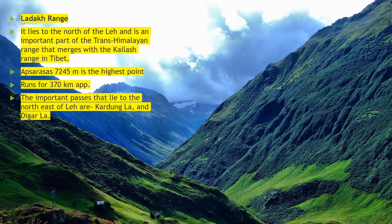Next comes the Ladakh range. It lies north of Leh and is an important part of the Trans Himalayan range that merges with the Kailash range in Tibet. Apsarasas, with 7,245 meters, is the highest point in the Ladakh range. This range runs for about 370 km approximately. The important passes to the northeast of Leh region are Kadung La and Daigar La — the word 'La' means passes.